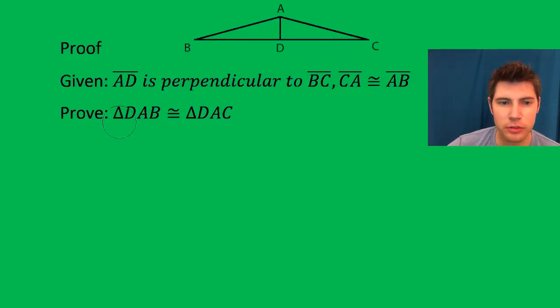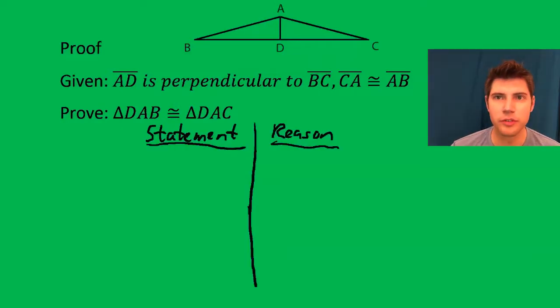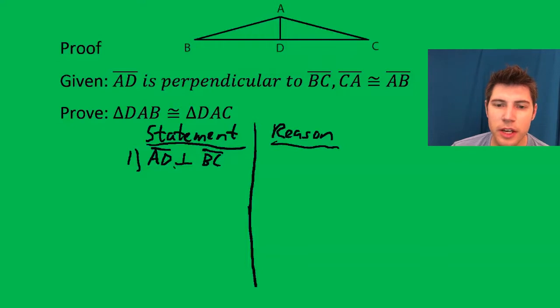So first, traditional proof setup is like this where you have statement and reason. So now step one, my first statement, I always like to do the given. So first given was AD is perpendicular to BC. The reason we give is given.